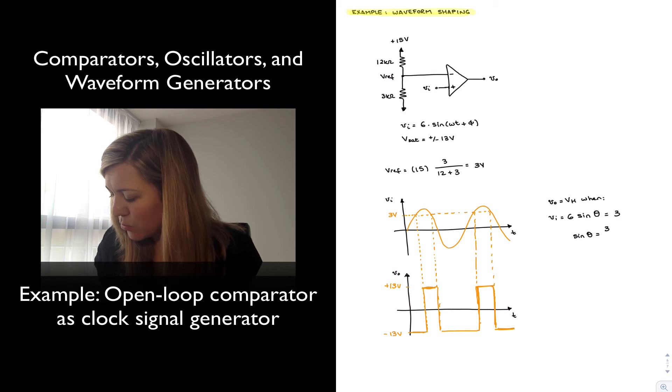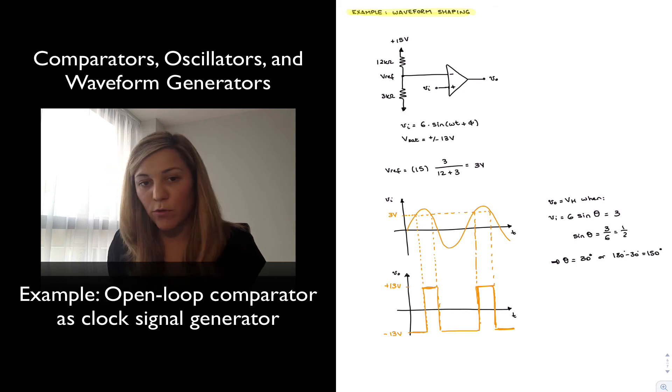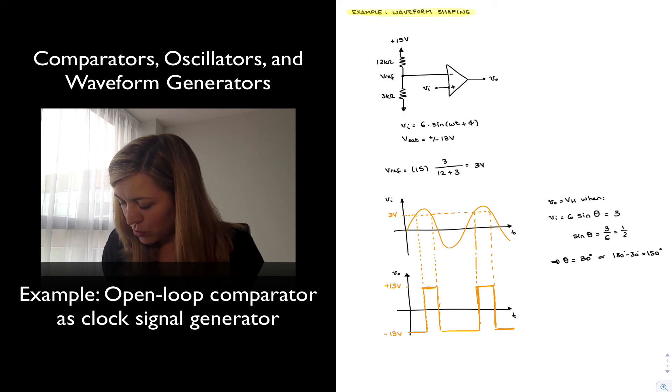That happens when sine of theta is equal to 3/6 or 1/2, which basically implies that theta is going to be equal to 30 degrees or 180 minus 30 degrees, which is 150 degrees. For those two values of my angle theta I will have sine equal to 0.5 or 1/2.